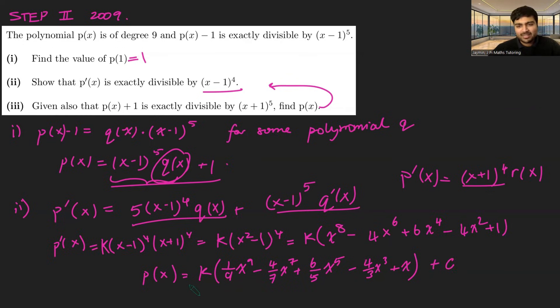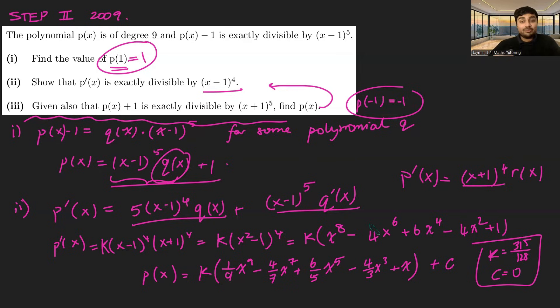And now we need to work out what k and c are, and then we'll be done. Well, we know that p(1) is 1, and also using this last condition here, we get that p(-1) is -1. And so that gives you two essentially conditions to check, and that's going to give you two simultaneous equations with k and c. Not super exciting to solve, so I'm not going to bother, but you're going to end up getting k equals 315/128, and c equals 0. And that will give you your final polynomial p(x).